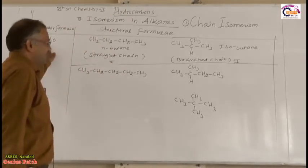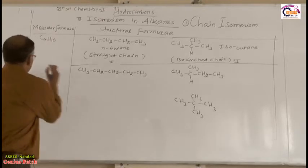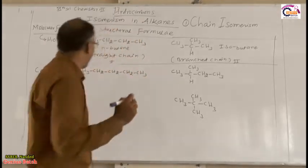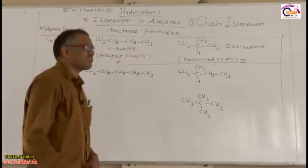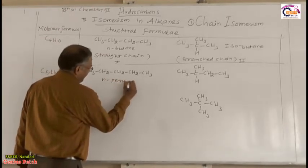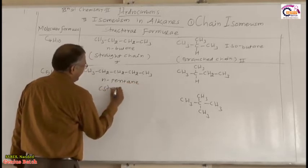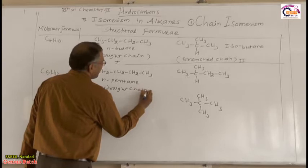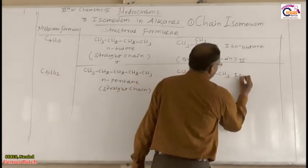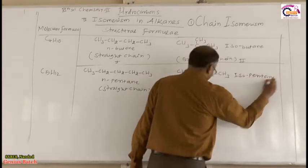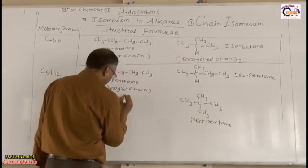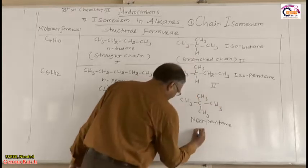Now the second example: suppose I have the molecular formula C5H12. How many structures can we write? The first is n-pentane — a straight chain because all carbon atoms are in a continuous chain. The second is isopentane. The third is neopentane. So the compound having molecular formula C5H12 has three different structures.